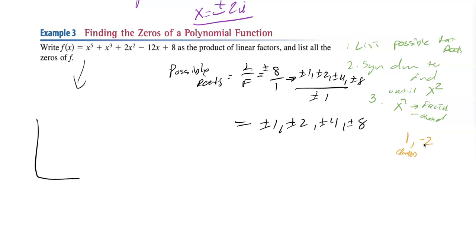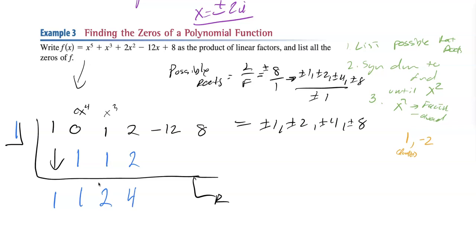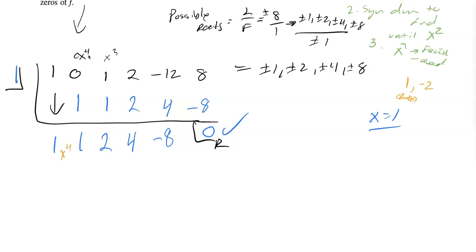Let's do synthetic division. The polynomial is x to the fifth — it's missing x to the fourth, so I put a zero coefficient there — then one for x cubed, two for x squared, negative twelve for x, and eight. We want the remainder to be zero. Bring the first one down, multiply across — one, add down one. Multiply, add: two. Multiply two, add down four. Multiply four, add down negative eight. Multiply eight, negative eight — and I get zero. So x equals one is one root. Now this is x to the fifth, so the quotient is x to the fourth. I've got more work to do.